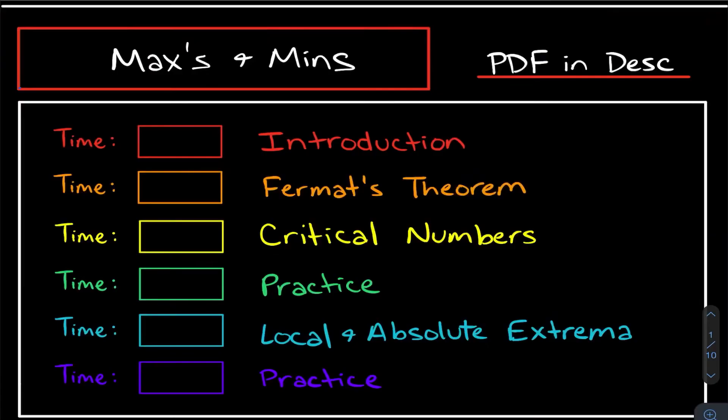What's going on everybody? In this video, we're going to be talking about maximum and minimum values. We'll be getting into Fermat's theorem, critical numbers, local and absolute extrema, all that stuff. So let's get into this video.